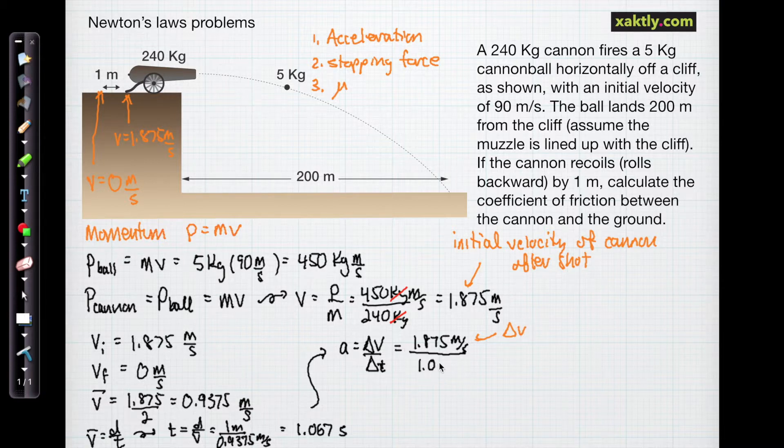And our time is 1.067 seconds. And so if we do that division, we get an acceleration of 1.758 meters per second squared.